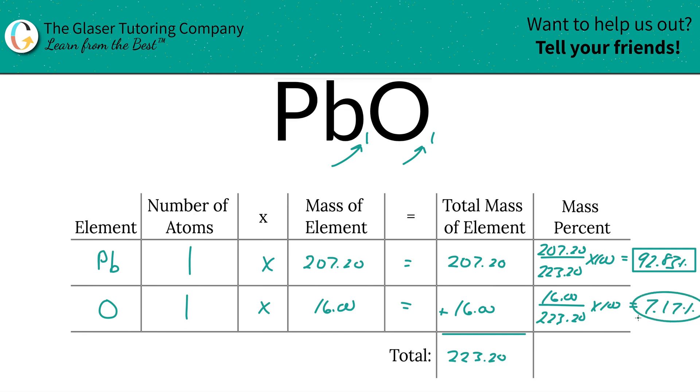And then all you got to simply do is just take these two percentages and add them on up. So the total percent here would be 100%, and that's just the way to kind of check yourself. And there you are, nice and happy.